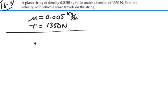Well, the velocity of waves on a string is equal to the tension divided by the mass per length μ, square root.